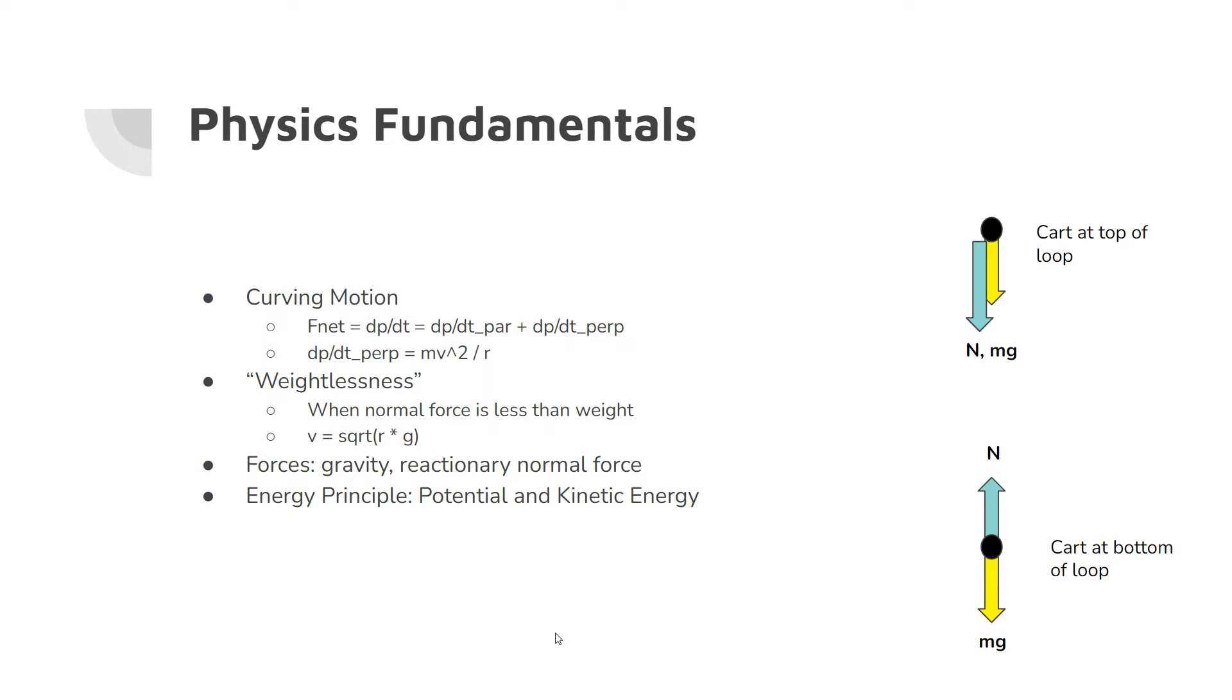So the physics fundamentals behind it. The main one is going to be that the cart is in a curving motion as it traverses the loop. So we do know that the net force is going to consist of two main forces: the normal force and the gravitational force. On the right is obviously the force diagrams.